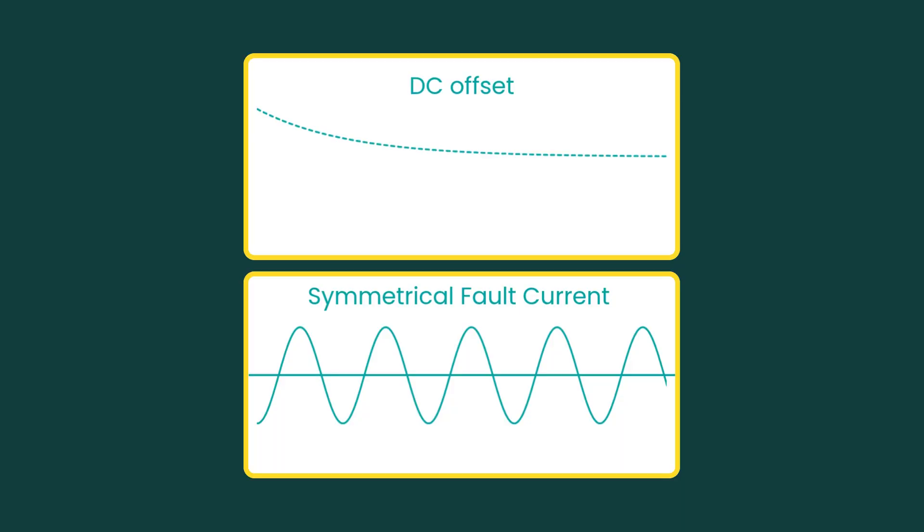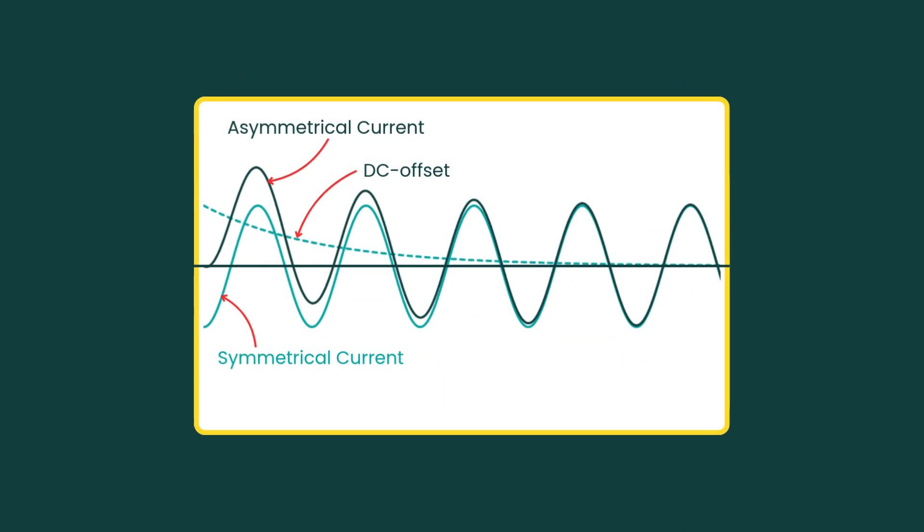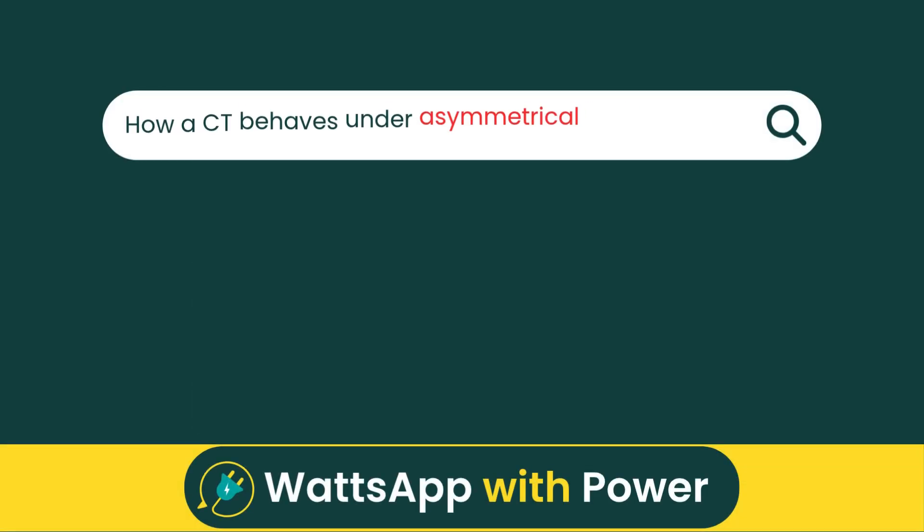For protection relays to operate properly during faults, the CT output under asymmetrical fault conditions must be reliable. So in this video, we will focus on how a CT behaves under asymmetrical fault current.